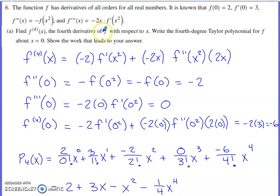Part A asks us to find f⁽⁴⁾(x), the fourth derivative of the function, and then to write the fourth-degree Taylor polynomial for f about x = 0. Show the work that leads to your answer. So first task is to find the fourth derivative. Well, they give us the third derivative right here, and as long as you recognize that that is a product and apply a product rule to find the fourth derivative, you should be in pretty good shape. Derivative of -2x is -2...